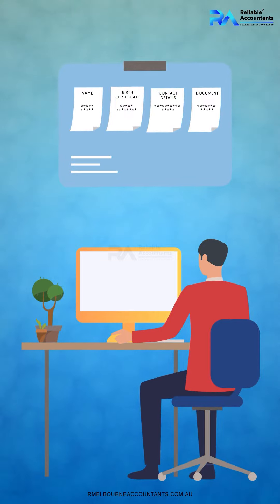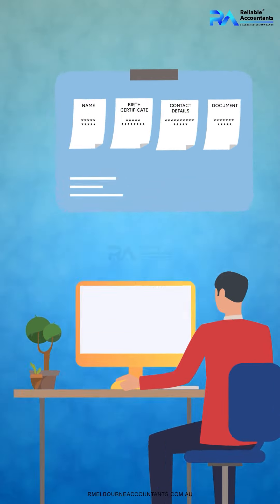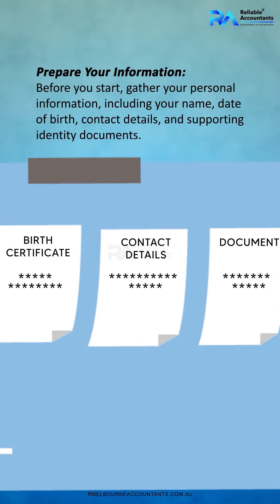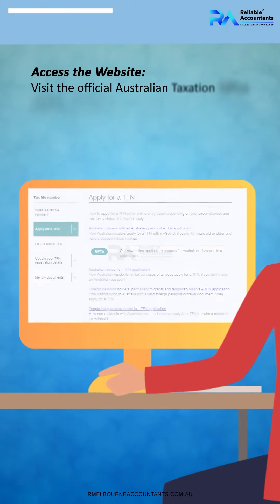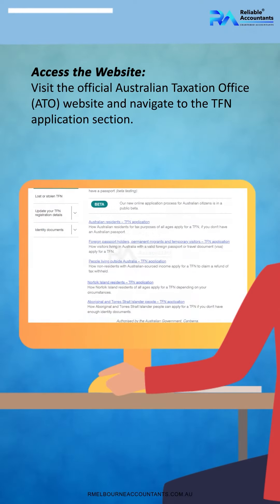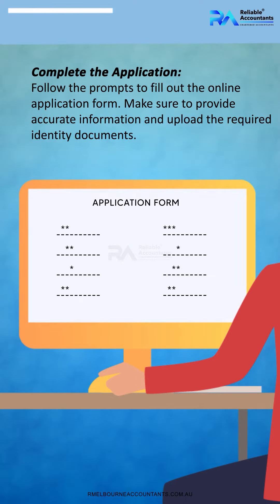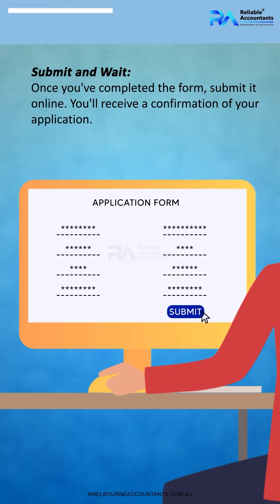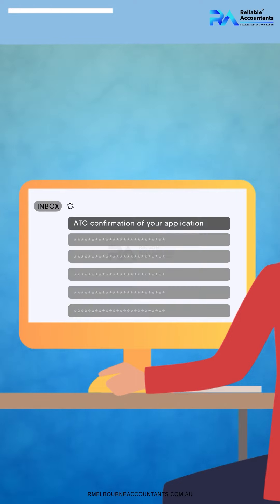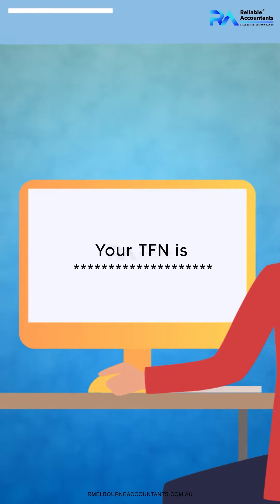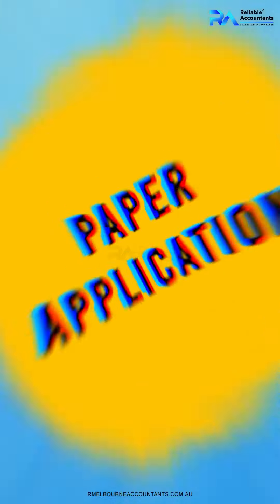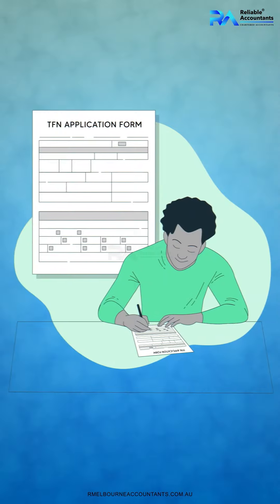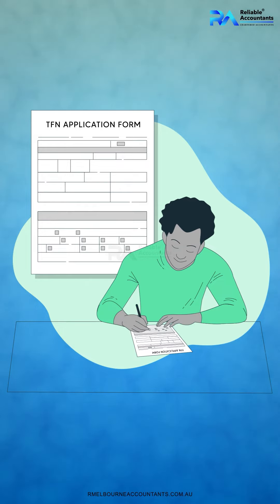Online application: for most individuals, applying online is the fastest and easiest way to get your TFN. The steps are: prepare your information, access the website, complete the application, submit, and wait for your TFN.